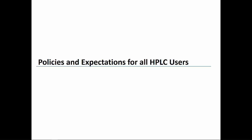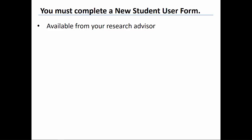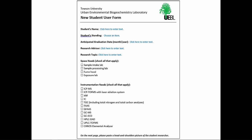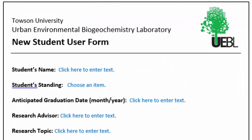Next we'll examine the policies and expectations applicable to all HPLC users. All student HPLC users must complete a new student user form, which is available from your research advisor. To complete the top part of the form, enter your full name, your standing as either undergraduate or graduate, the anticipated month and year of your graduation from TU, the full name of your research advisor, and a brief description of your research topic.